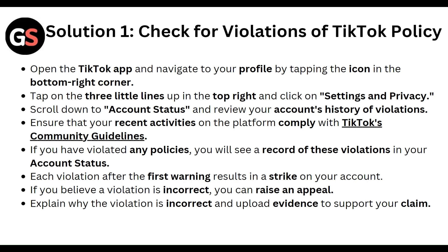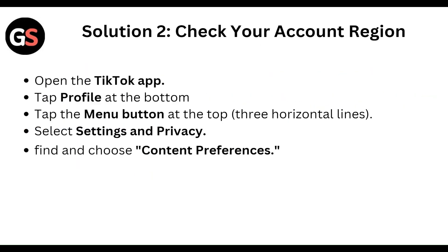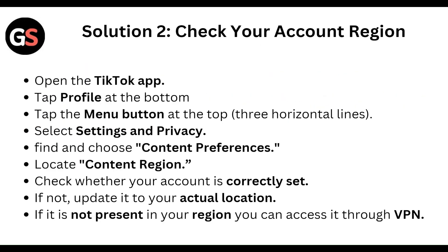If you believe a violation is incorrect, you can raise an appeal. Explain why the violation is incorrect and upload evidence to support your claim. Secondly, check your account region: open the TikTok app, tap into the profile, and tap the menu button at the top.